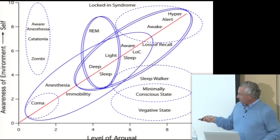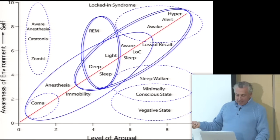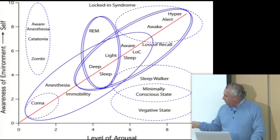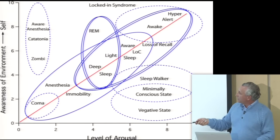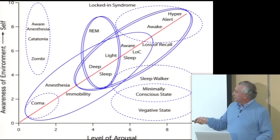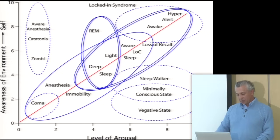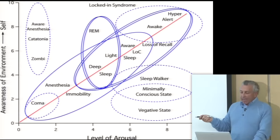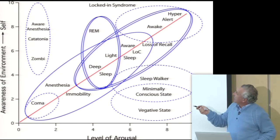This chart shows the different conditions and states of consciousness and where they stand in terms of levels of arousal. Along the x-axis are the levels of arousal, and on the y-axis is the awareness of the environment or self-awareness. There is something physiological, something on the level of consciousness, and something on the level of individual awareness — all related.